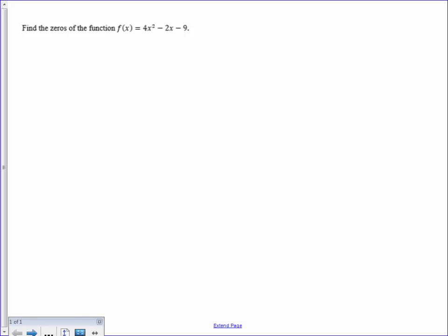Here we are asked to find the zeros of the function f of x equals 4x squared minus 2x minus 9. To find the zeros means to substitute 0 where f of x is. So our new equation would be 0 equals 4x squared minus 2x minus 9.